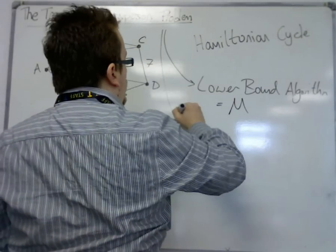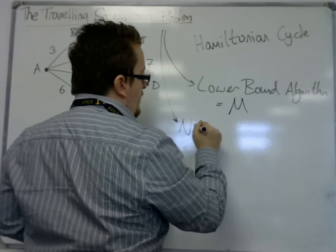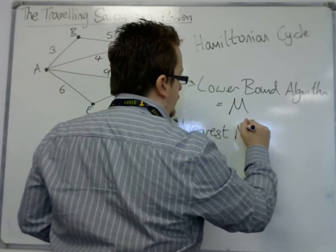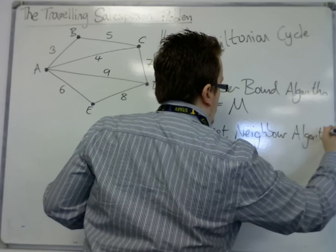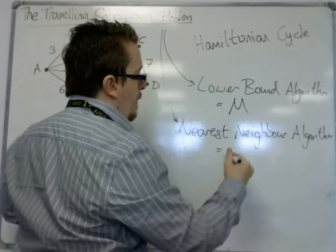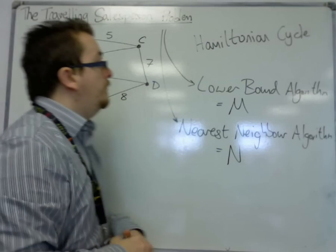And then we have an upper bound algorithm known as the nearest neighbour algorithm. And that will give us an upper bound, let's say N.